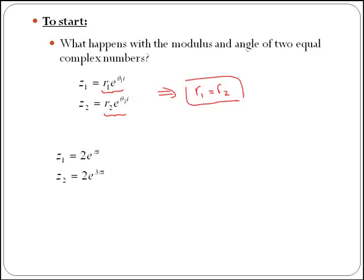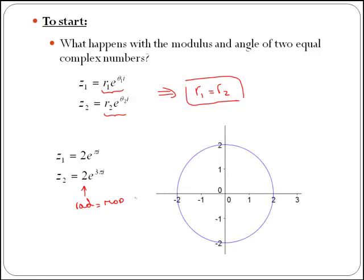If we plot those two complex numbers, you can easily see if they are equal or not. To plot complex numbers that are given in exponential or polar form, we will build a circle with radius equal to the modulus of our complex number, so in this case 2. Therefore, we know that our complex number will be somewhere on this circumference.